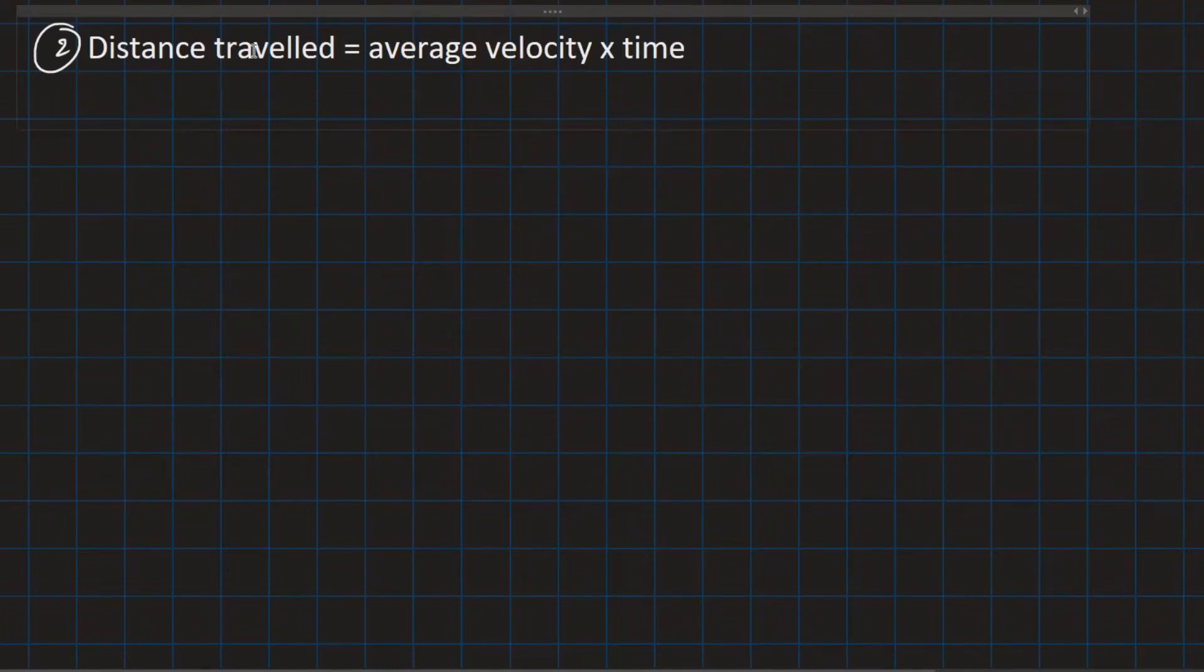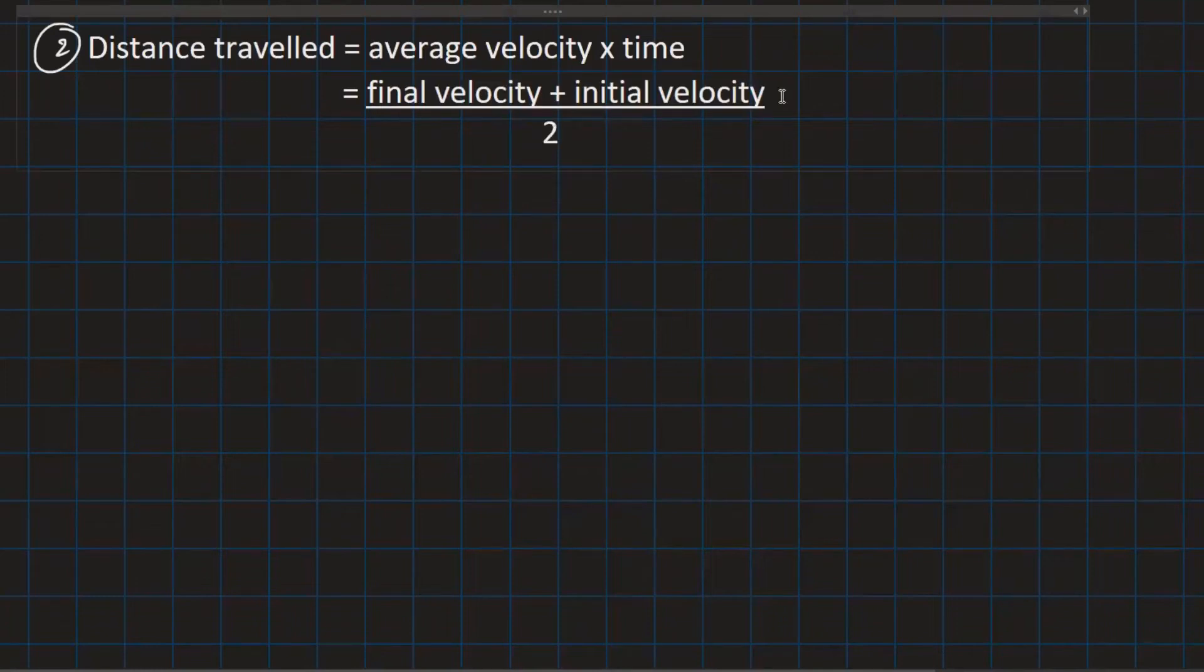So this is a distance traveled. Now there is another formula for average velocity, something that we have not used so far, that is final velocity plus initial velocity upon two.